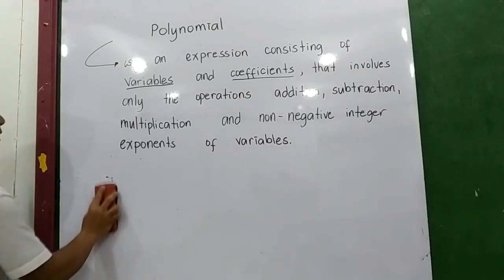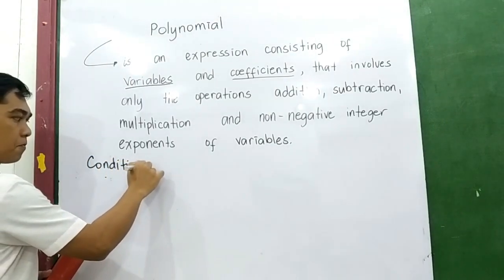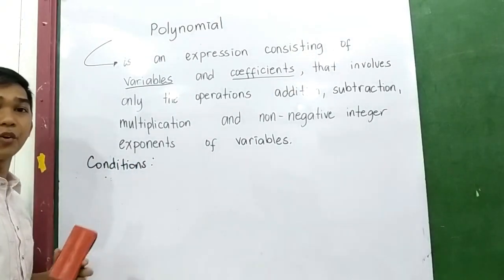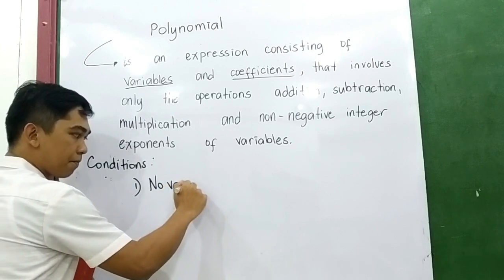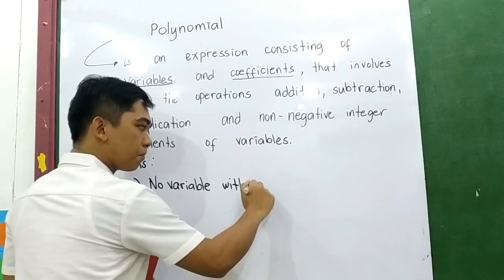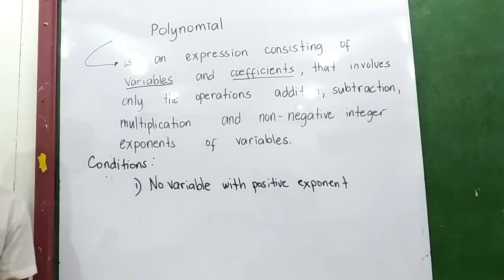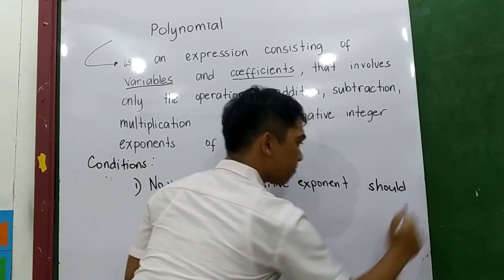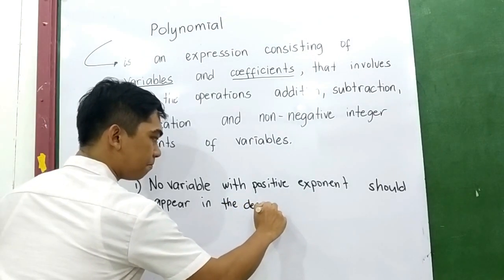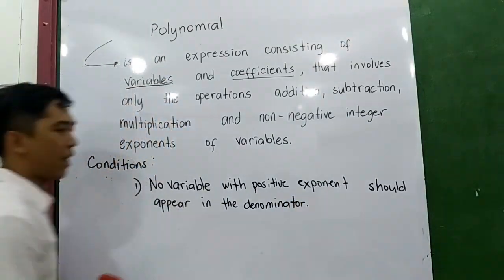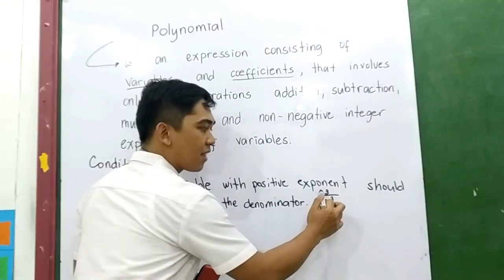There are certain conditions that determine whether an expression is a polynomial or not. Let us discuss what those conditions are. Number 1: no variable with positive exponent should appear in the denominator. For example, if the given expression is 3 over x cubed, that means this is not a polynomial.